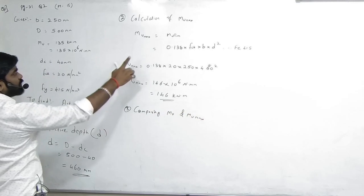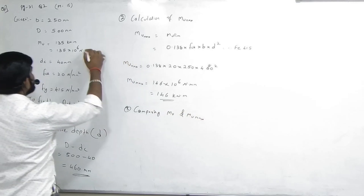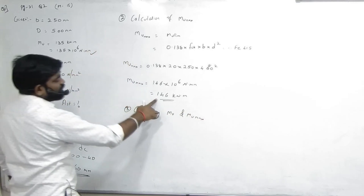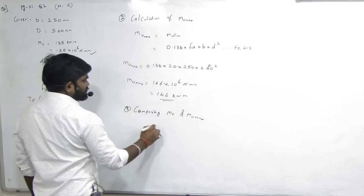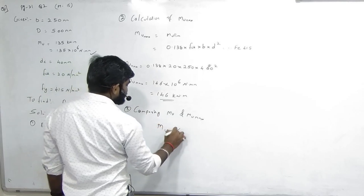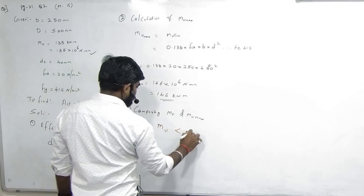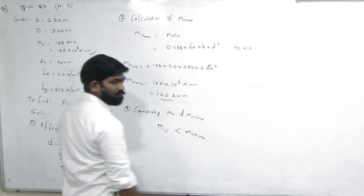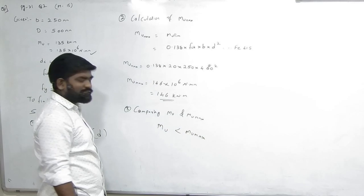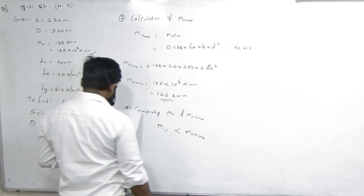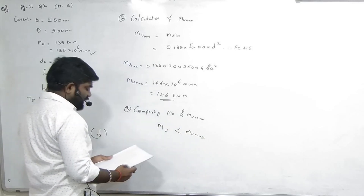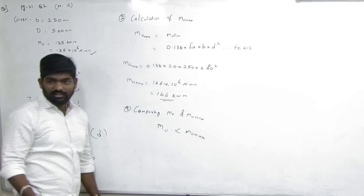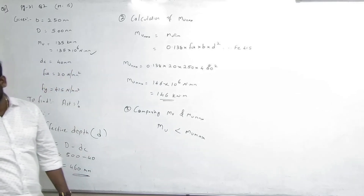MU kitna hai? 135. MU.max kitna hai? 146. So MU is less than MU.max. Agar MU less aaya toh next step kya hona chahiye? AST calculation.